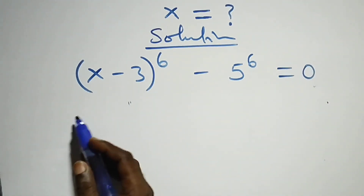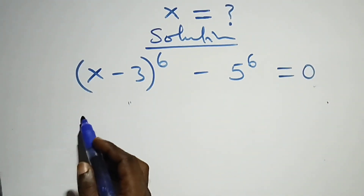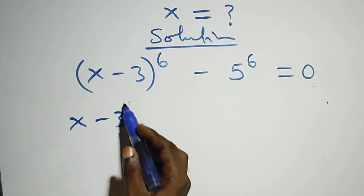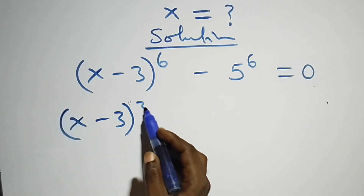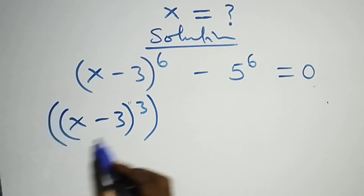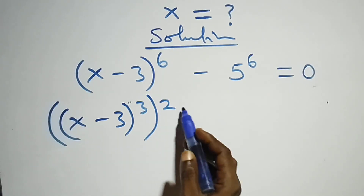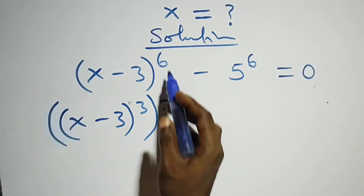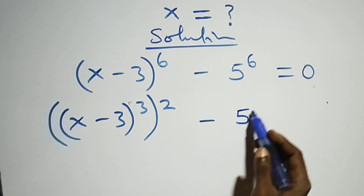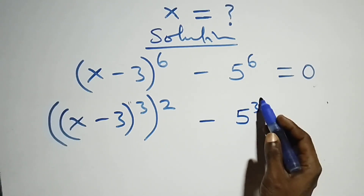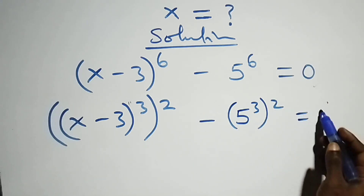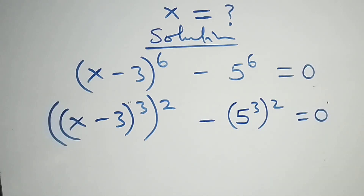That is, we can also write this as (x minus 3) times 4 raised to power 3, then all raised to power 2, as 2 times 3 gives us 6, and also minus 5 raised to power 3, then raised to power 2, which is equal to zero.